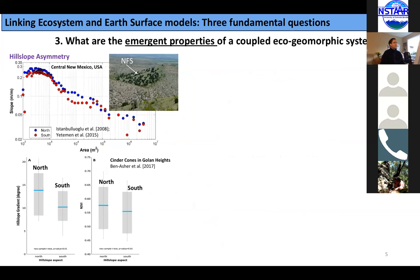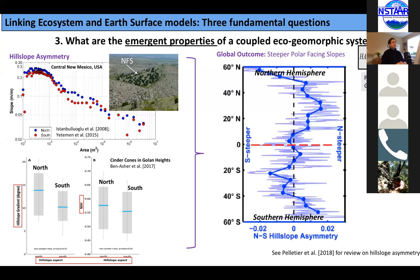Another study from the Golan Heights shows that northern aspects have steeper gradients and also have more vegetation. At the latitudinal scale, perhaps even the global scale, these patterns appear pervasive. A paper published by Polis et al. shows that poleward-facing slopes are always steeper between 40° north and 40° south latitudes than equatorial-facing slopes. So this is an emergent property.